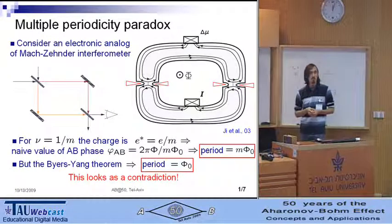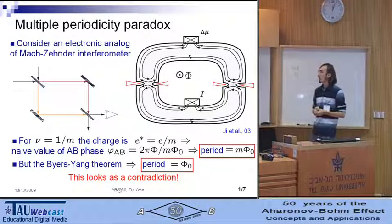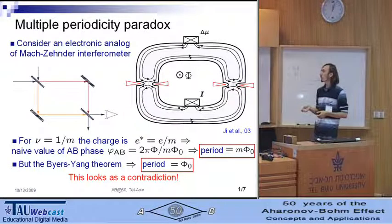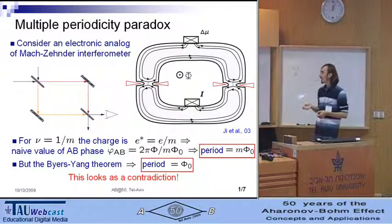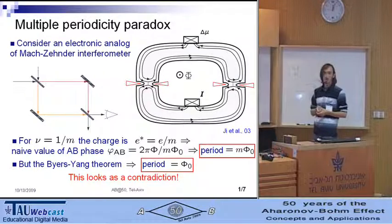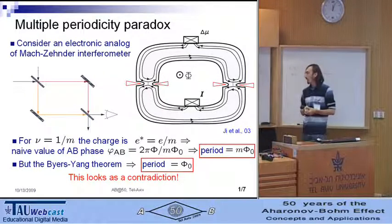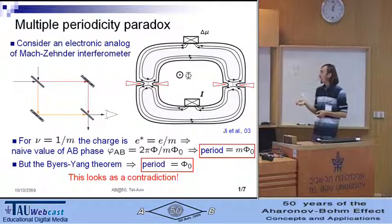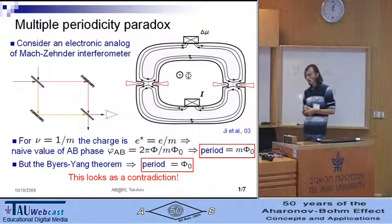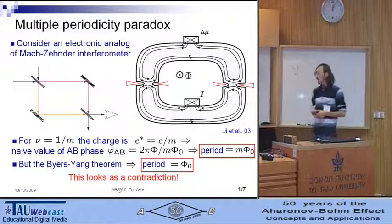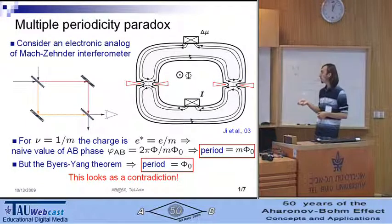Thus, naively, the value of Aharonov-Bohm phase, which is picked up by the quasiparticles in this loop, is m times smaller than for electrons. And the period of quasiparticle current should be m times larger.